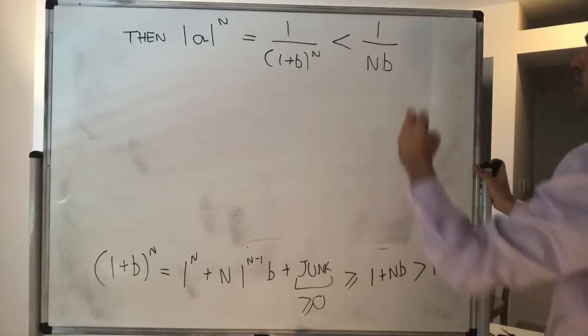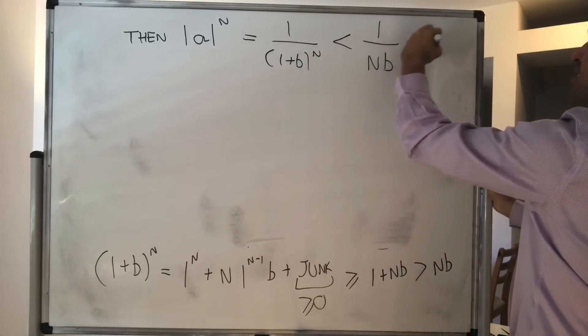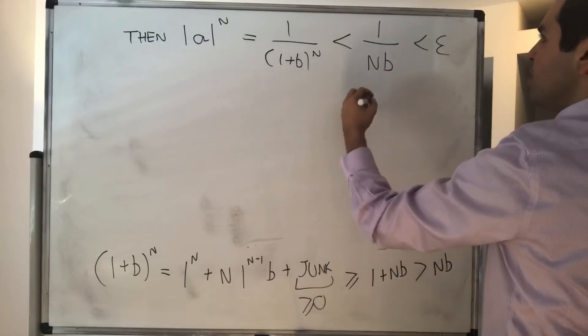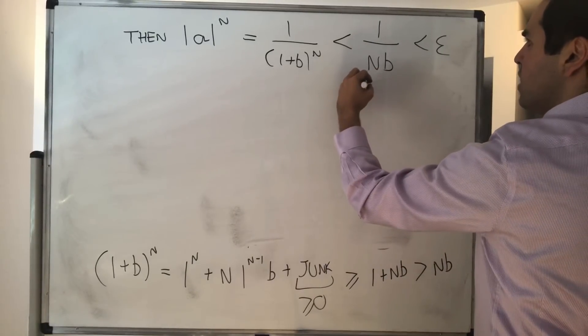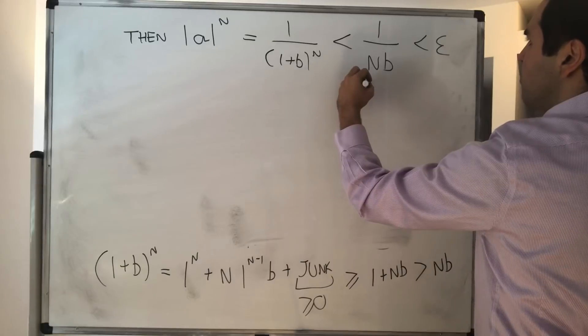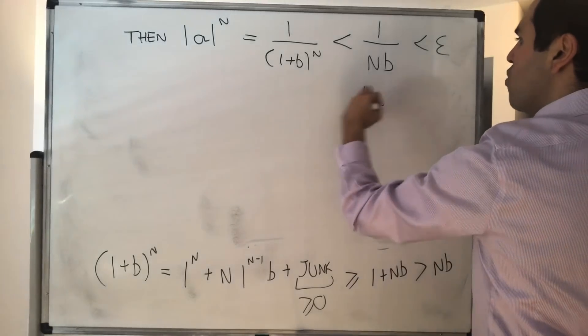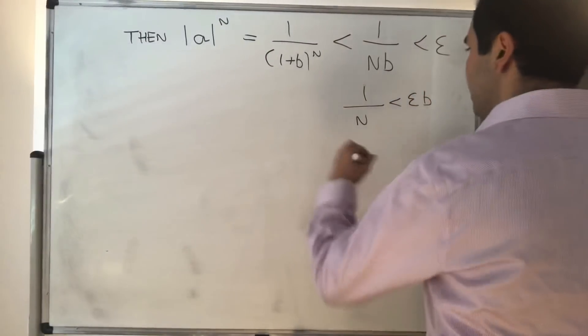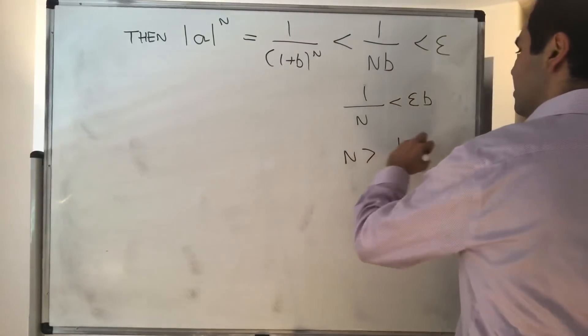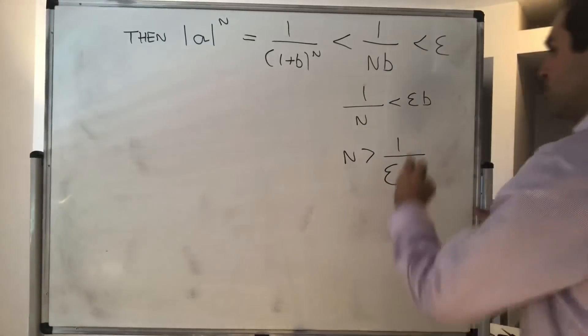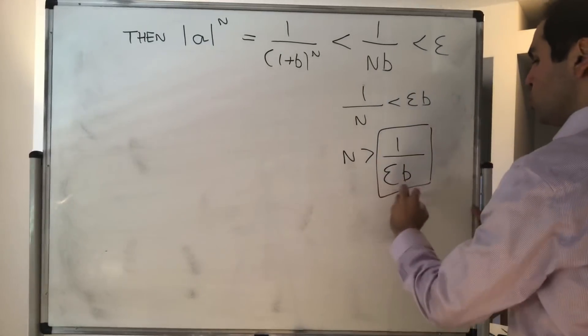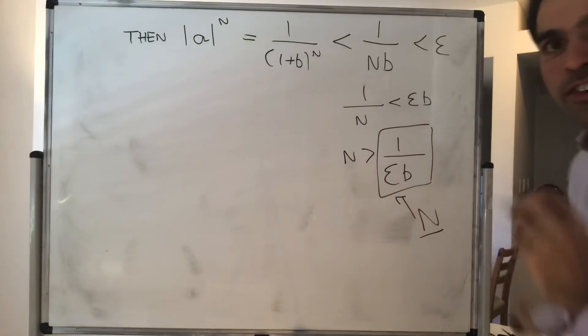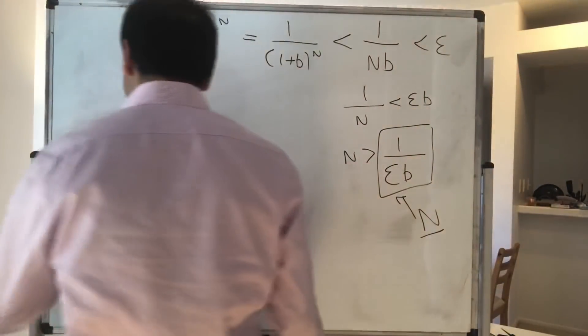And what we want, we want this to be less than epsilon. Eventually, and in particular, what we need, we need to choose. So we get 1 over n is less than epsilon b, and then what we get is n is greater than 1 over epsilon b, and this suggests to choose this capital N, just to be 1 over epsilon b. All right, and now let's execute this. So step two,